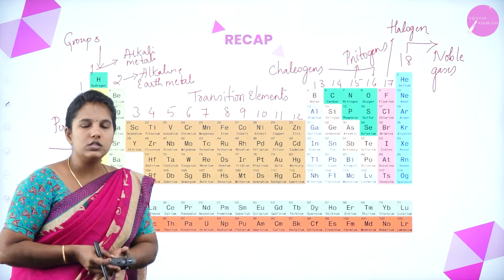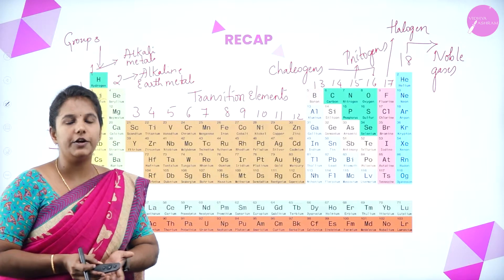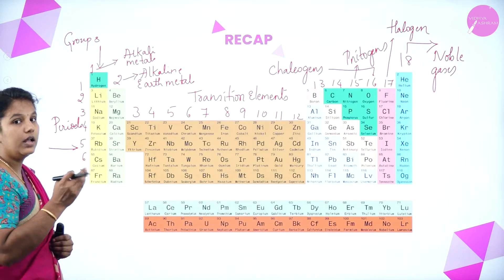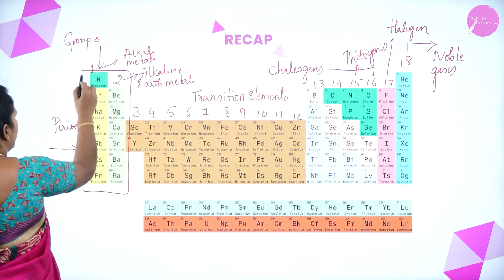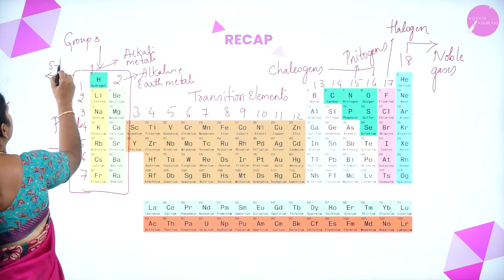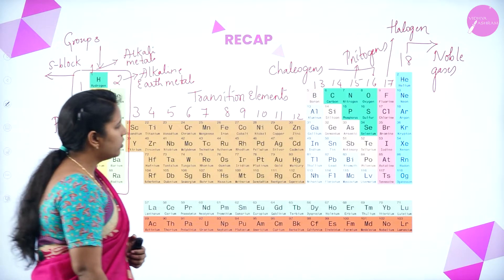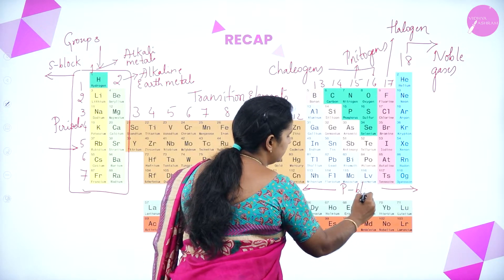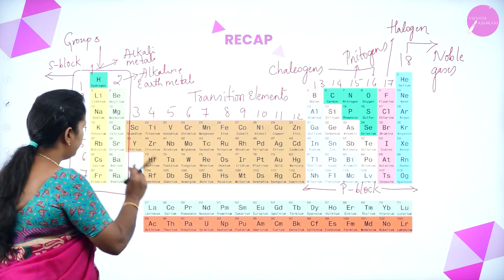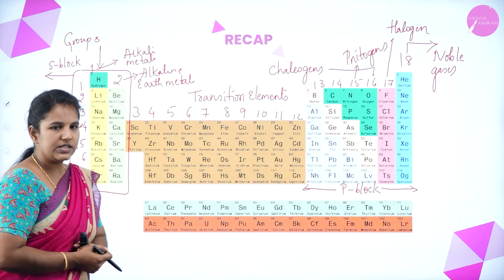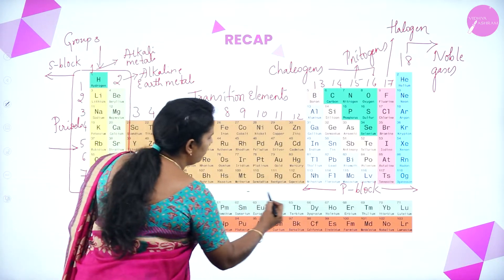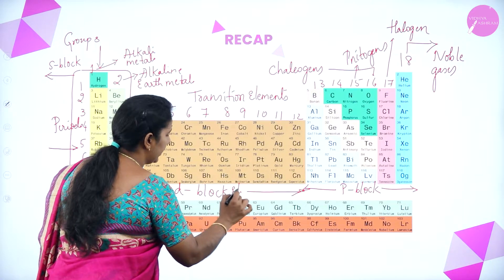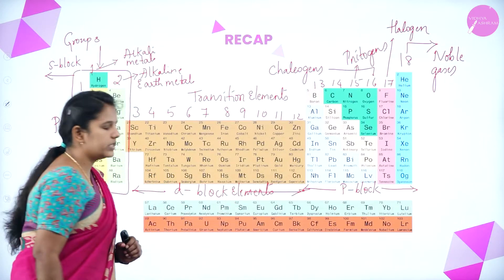He also classified all the elements in the periodic table into s, p, d, and f orbital blocks. Group 1 and group 2 belong to the s-block elements. From group 13 to group 18, they are known as p-block elements. The transition metals from group 3 to group 12 are known as d-block elements.